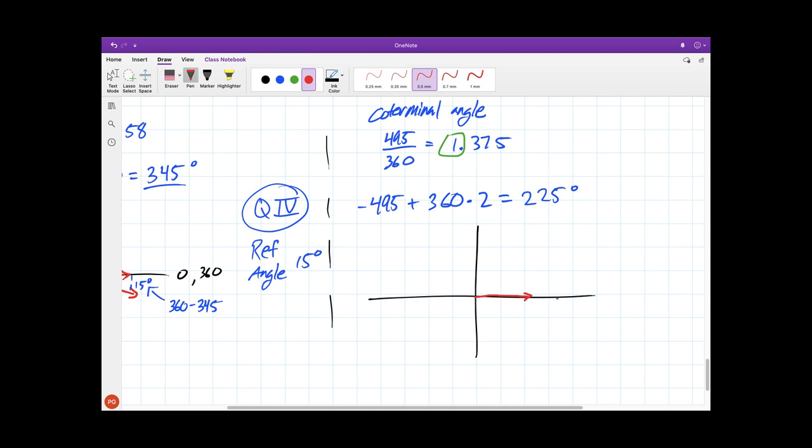So we want to multiply 360 by 2, which would give us a coterminal angle of 225 degrees. This is positive 225 degrees: 90, 180, 225. So it's going to be somewhere in this area, probably about halfway in between.